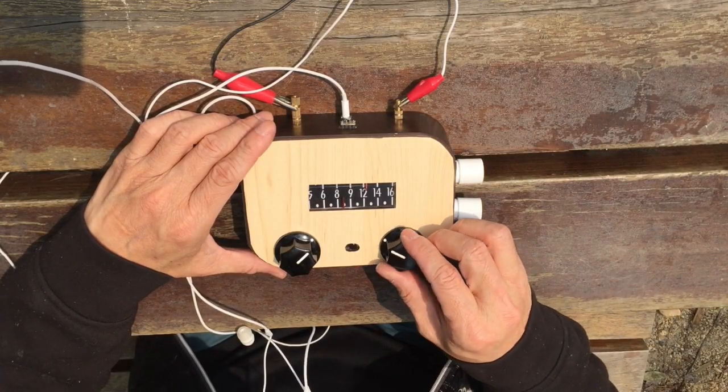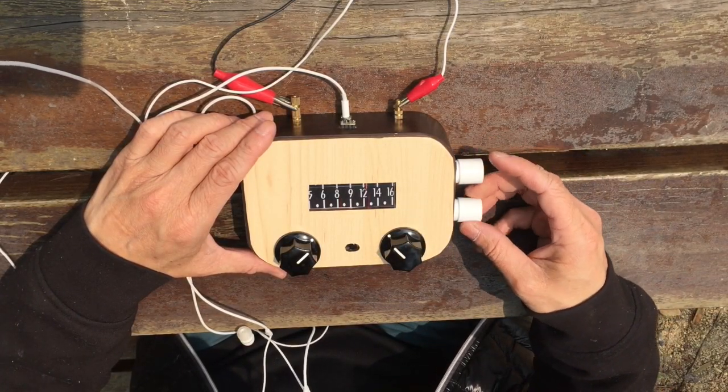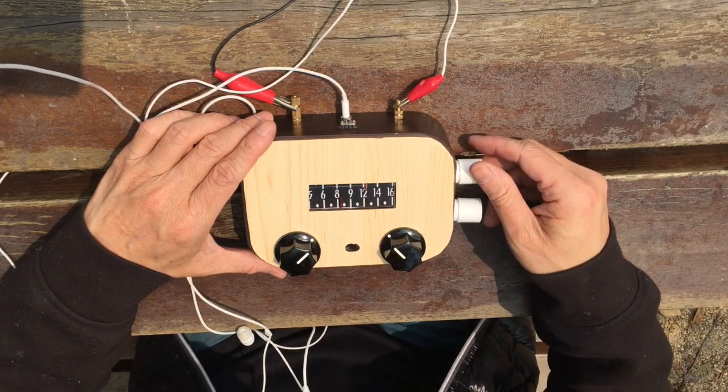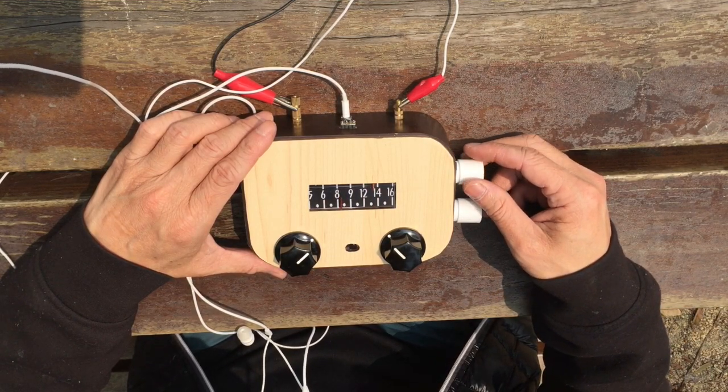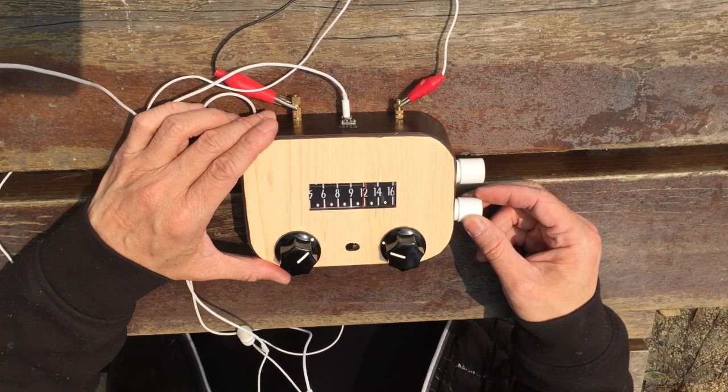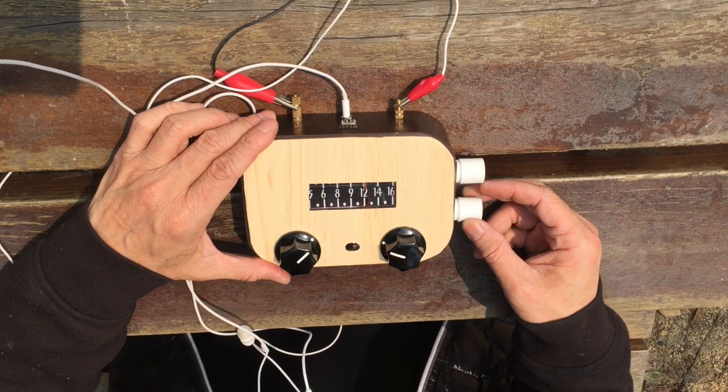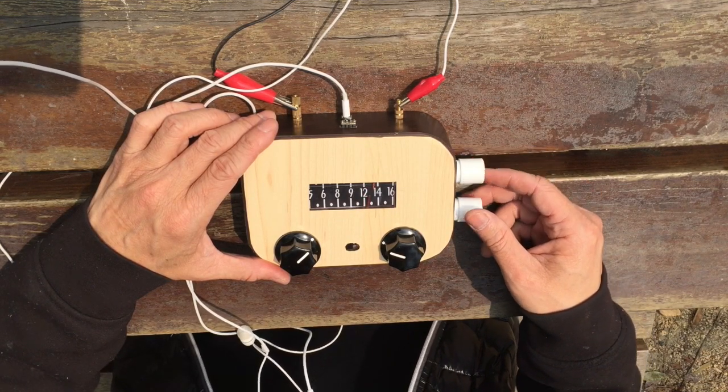This is my lipstick crystal radio. It tunes by a variometer instead of a variable capacitor. So you remove the lipstick, turn it, and then it pulls the ferrite in and out of the coil to tune to the next station.